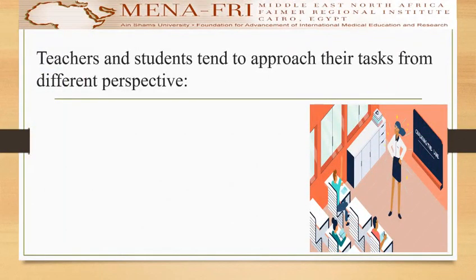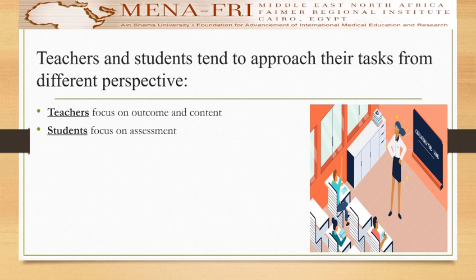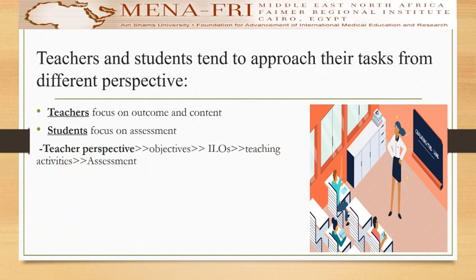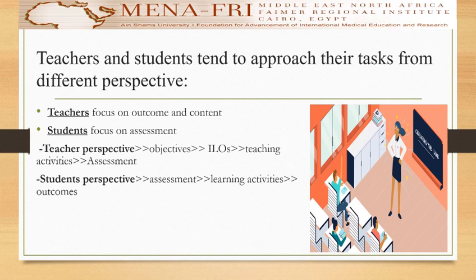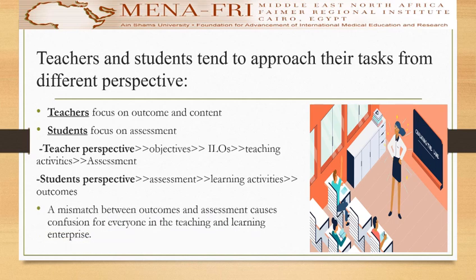Also, teachers and students tend to approach their tasks from different perspectives. If we look at the teacher perspective, he focuses on the outcomes and the content, while the student focuses on the assessment itself. So the teacher perspective is: objectives, teaching activity, and assessment; whereas the student perspective is: assessment, learning activity, and outcome. We can see there is a mismatch between outcomes and assessment that causes confusion for everyone in the teaching and learning enterprise.